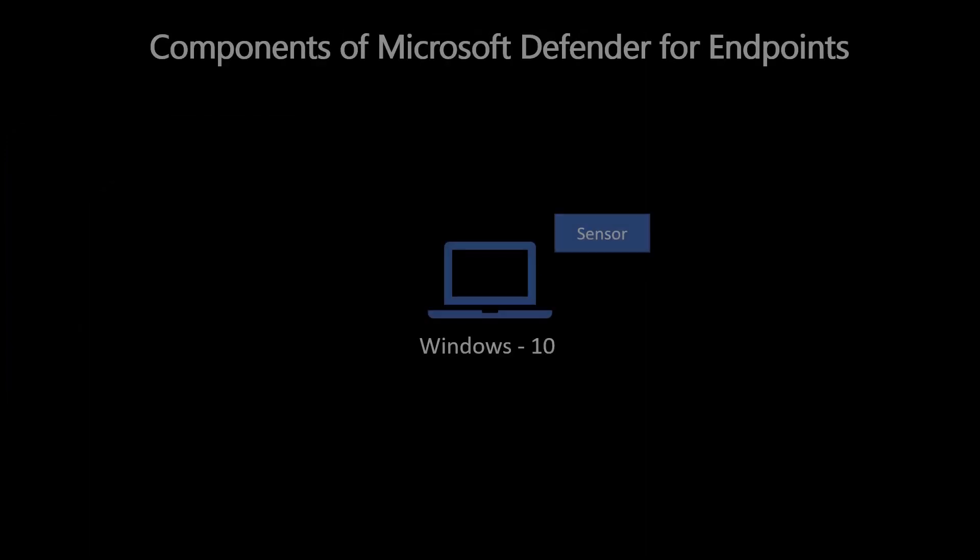Now let's talk about the components of Microsoft Defender for Endpoints. For any endpoint security product, there must be an agent on the device that monitors everything happening on it — only then can it prevent threats. Since we're talking about Windows 10, the most widely adopted operating system globally, the sensor or agent is already embedded. For other platforms, you need to install an agent or application.